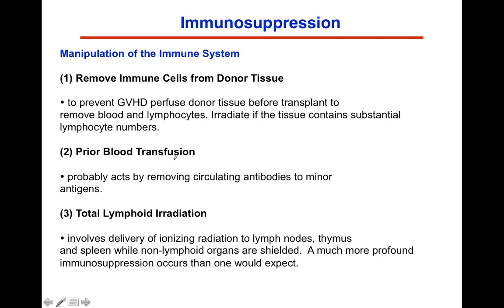Another approach is prior blood transfusion. This works by essentially removing the blood from the patient and putting donated blood back in, which will transiently dilute the patient's antibodies. There's also total lymphoid radiation, which involves delivering radiation to the lymph nodes, the thymus, and spleen, while non-lymphoid organs are shielded. This produces a more profound immunosuppression than one would expect, basically knocking out the whole immune system.